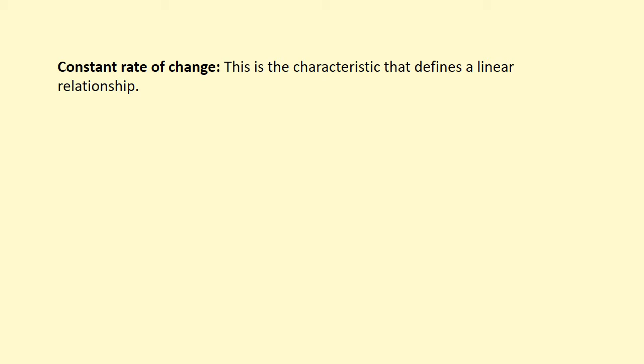In the next couple of sections of the book, we're going to be talking about linear relationships. They're called linear relationships because when you draw a graph of the relationship, you end up with a line. What's happening mathematically to make it into a line is that you have a constant rate of change between two variables.